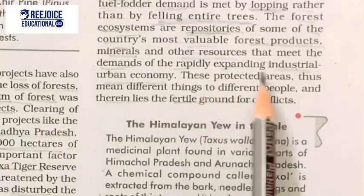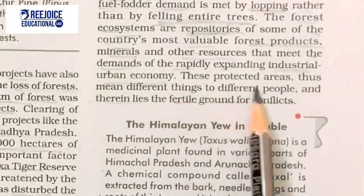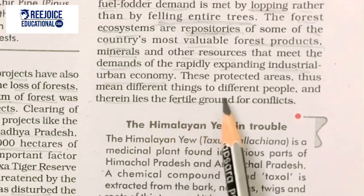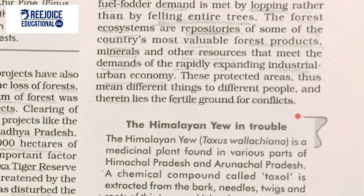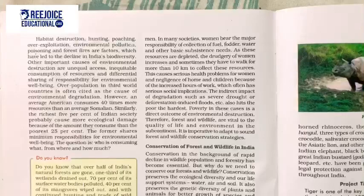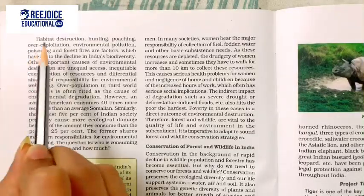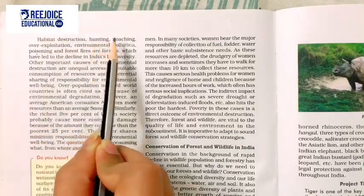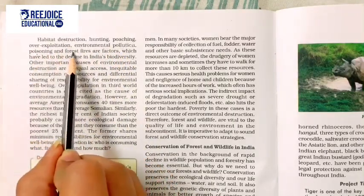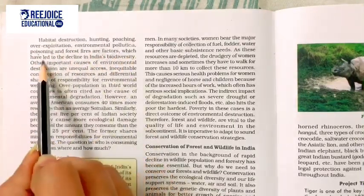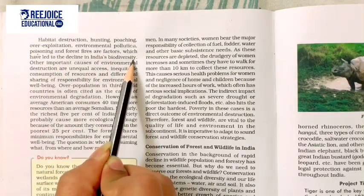These protected areas mean different things to different people, and therein lies the fertile ground for conflicts. Habitat destruction, hunting, poaching, over-exploitation, environmental pollution, poisoning, and forest fires are factors which have led to the decline of Indian biodiversity.